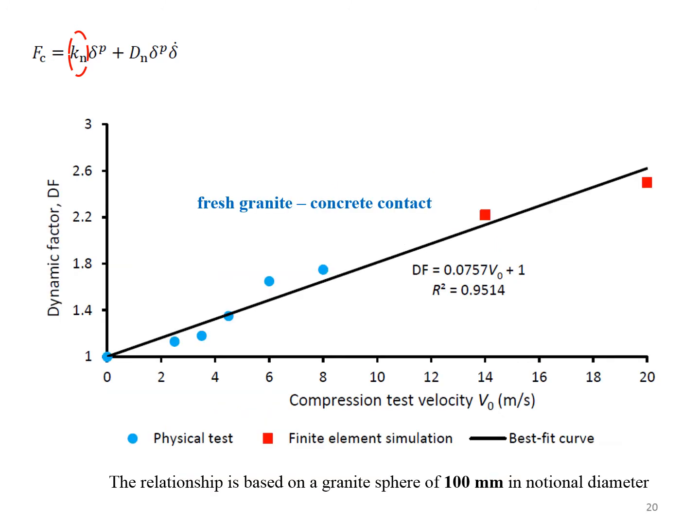A linear correlation has been developed by combining test results with that of numerical simulations. And the chart being shown enables us to read off the dynamic factor, DF, in order to make corrections to the slope of the force displacement relationship observed from quasi-static testing.